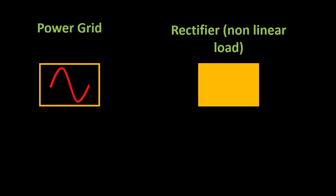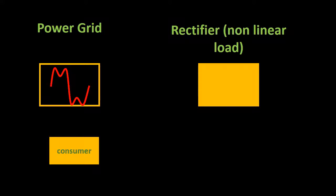This manipulation of the waveform is why a rectifier is considered to be a non-linear load. Non-linear loads reflect power back into the grid at various frequencies and phases, referred to as harmonics. Harmonics interfere with the incoming power to create a distorted waveform on the grid. Other consumers will have to put up with this distorted grid waveform.